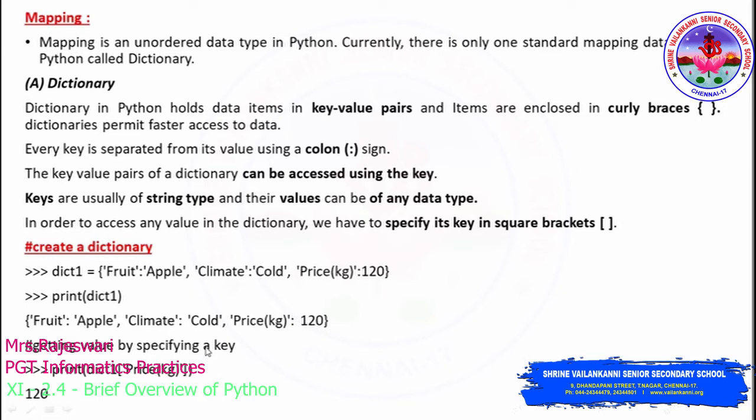Sets and mappings together are used in the concept of dictionary — both these data types come under dictionary. Regarding the dictionary concept, you will study in depth in a later chapter. For now, we will just discuss what is meant by mapping. Mapping is an unordered data type in Python, and there is only one standard mapping data type in Python, which is called the dictionary.